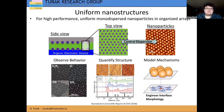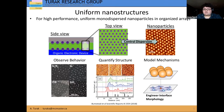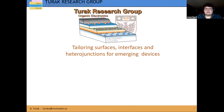Our interest in moving these particles from academically interesting into an industrial sense is to strive for uniform nanostructures. For high performance, you really want uniform monodisperse nanoparticles that form in organized arrays. My organic electronic interfaces research group is really focused on tailoring surfaces, interfaces, and heterojunctions, particularly for emerging devices, including solar cells, light-emitting diodes, sensors, and different kinds of microelectronics.